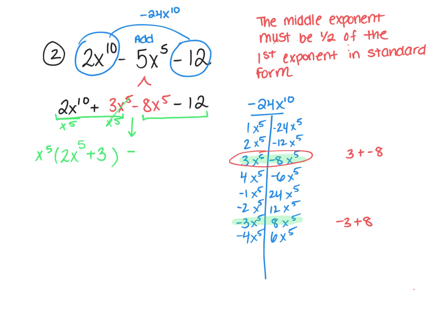For the second group, the GCF between negative 8 and negative 12 is negative 4. Dividing each piece by negative 4: negative 8 divided by negative 4 is positive 2, bring down x to the fifth; negative 12 divided by negative 4 is positive 3 — a negative divided by a negative is a positive. These are my common factors, so I bring down 2x to the fifth plus 3, and I'm left with x to the fifth minus 4. Always check your final answer for difference of two squares. Since x to the fifth has an odd power, I can't apply DOTS here, so this is my final answer.